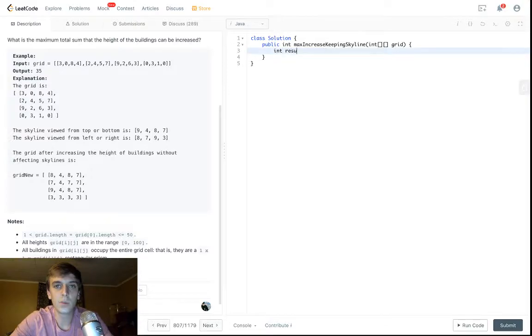And then the formula is basically we have this result variable or sum, and we're going to be adding the minimum of the max column val and the max row val, and then subtracting the current element. This is the whole formula right here. We do result plus equal min of the max column val and the max row val minus the current value.